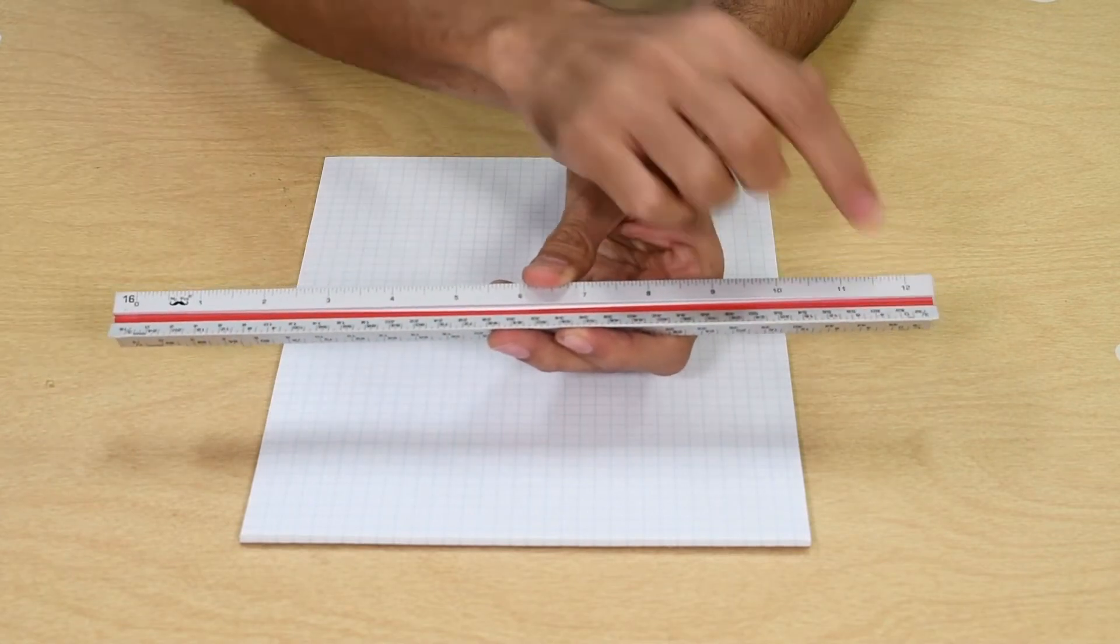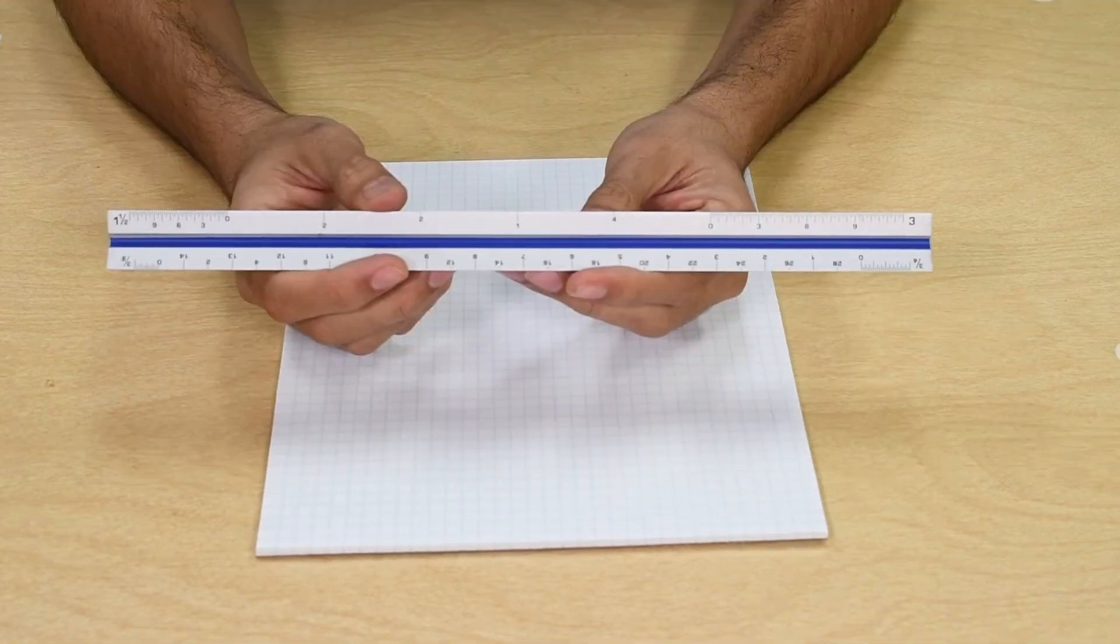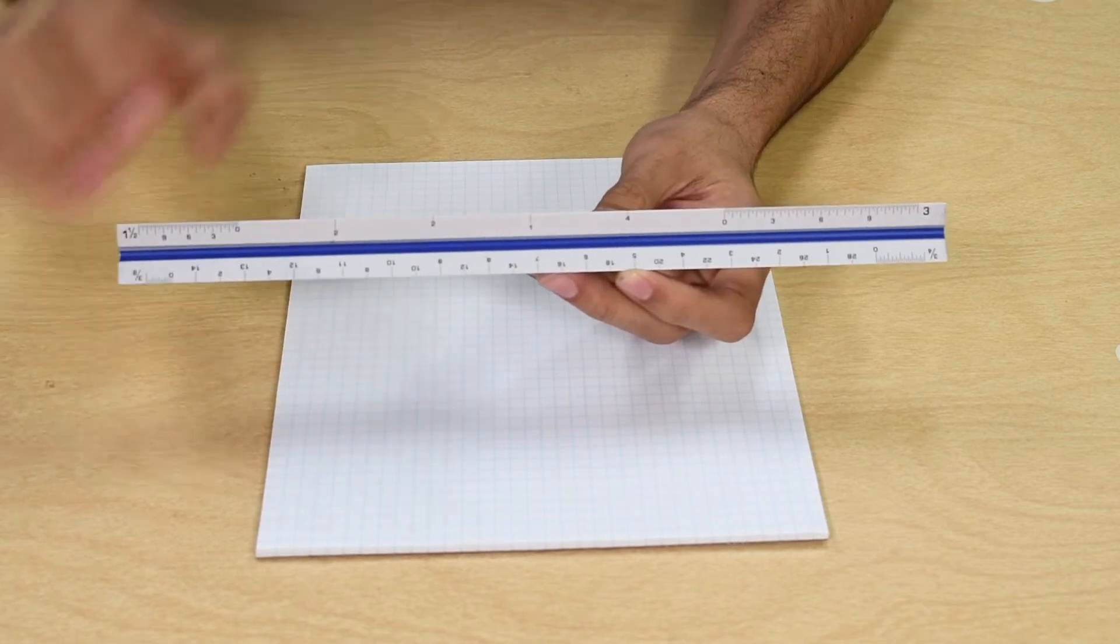The numbers on the side tell you what scale you are using. On each side you notice two sets of graduations. That's because there are two different scales per side.